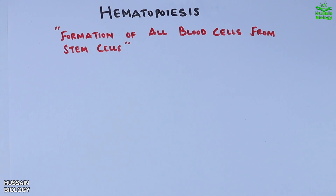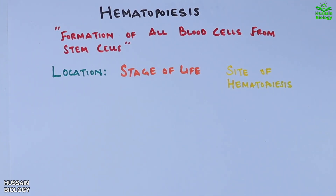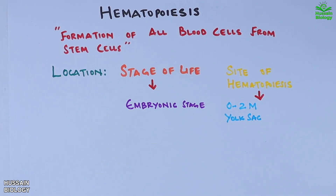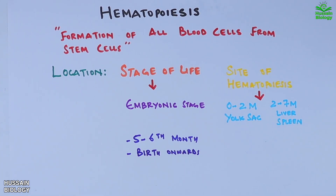Let's break it down by location and timing. During the embryonic stage, the yolk sac is the primary site from around zero to two months of gestation — this is where the very first blood cells are produced. From two to seven months, the liver becomes the major site of hematopoiesis, with some contribution from the spleen.